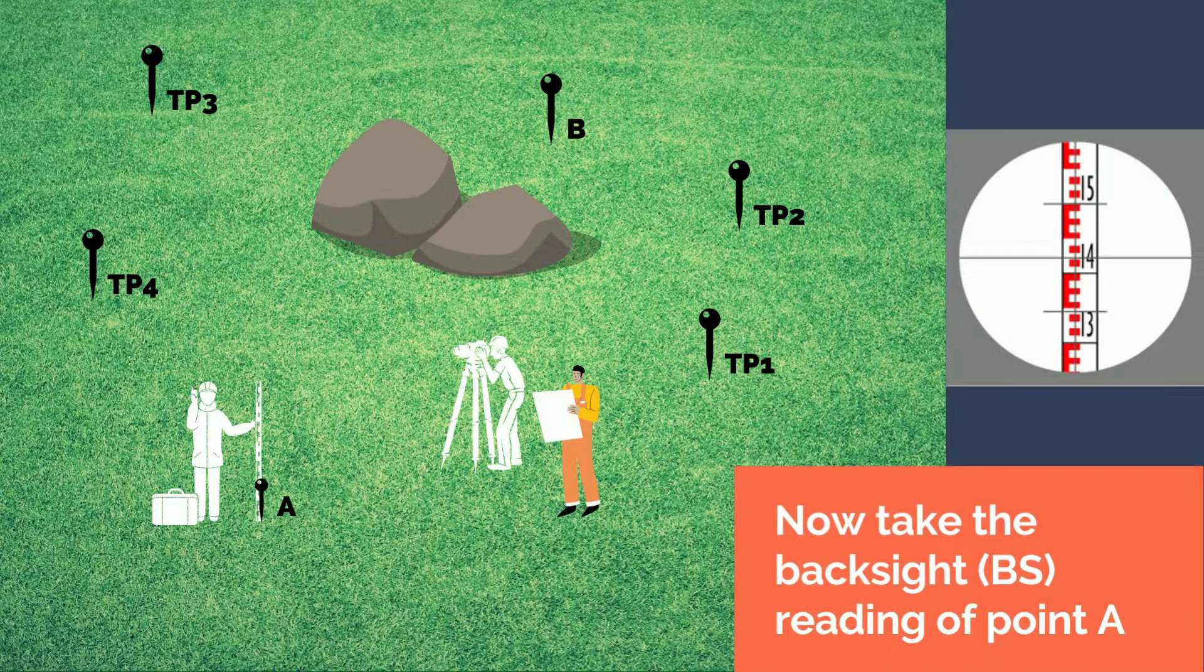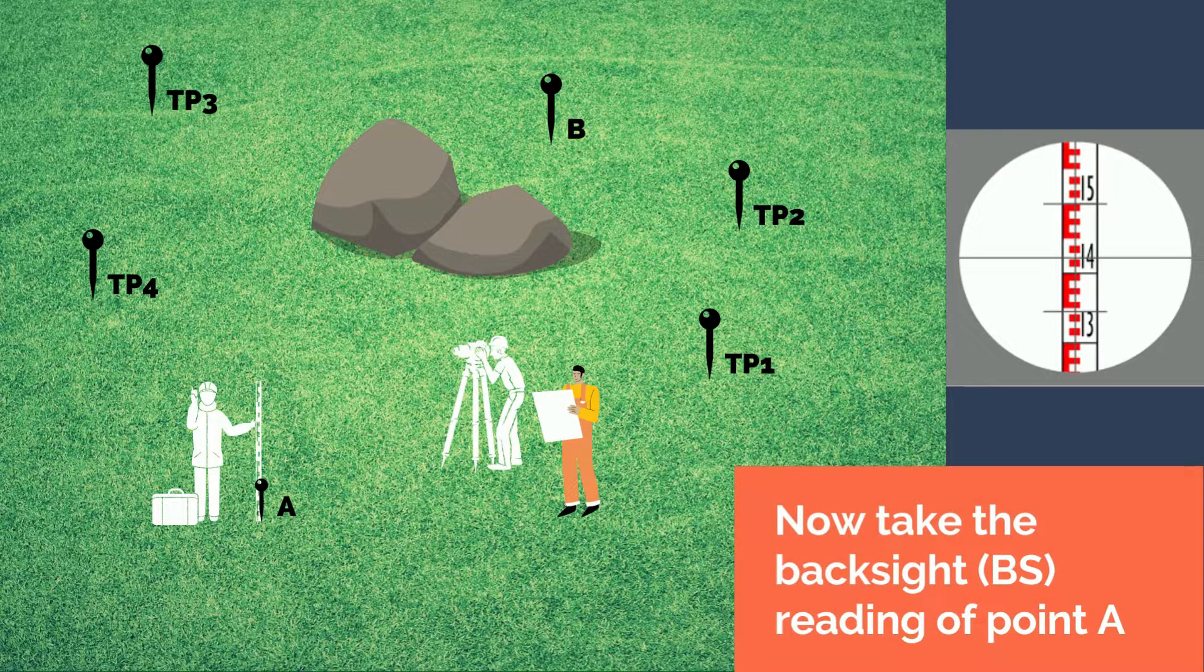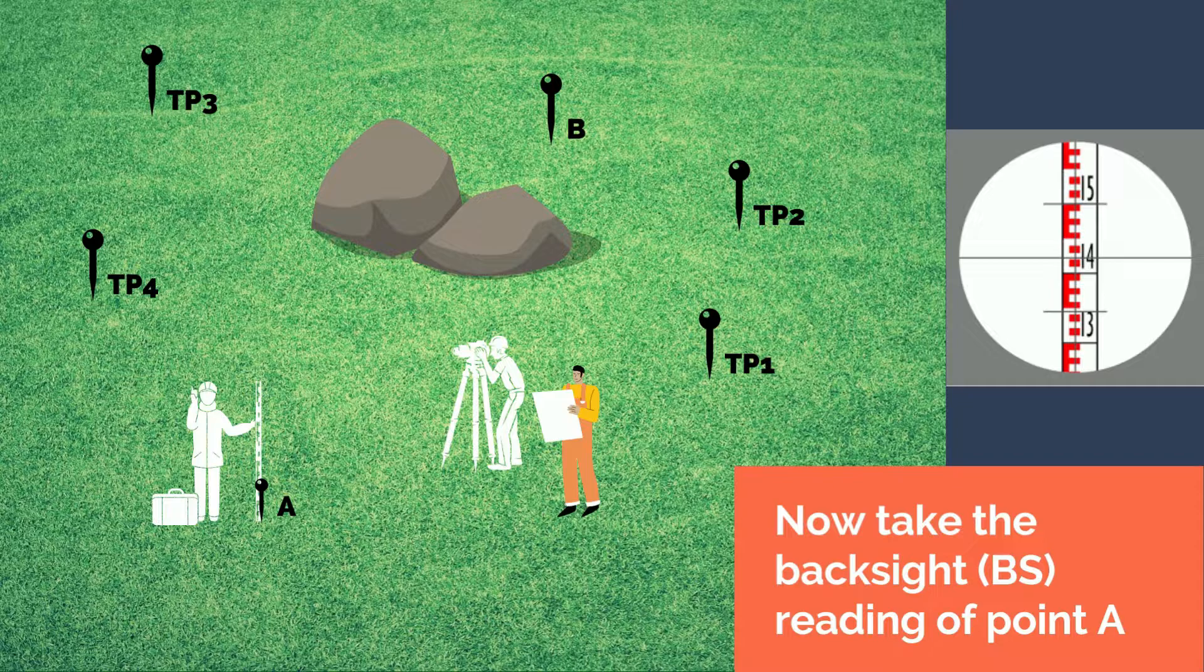Afterwards, the instrument man may now take the backsight reading of point A. Take note that the reading must be done up to the accuracy of a millimeter or thousandth of meter.